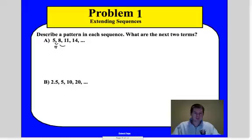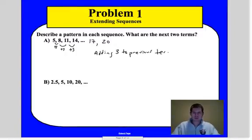So I see plus 3, plus 3, plus 3. So basically now what we're going to say is 14 plus 3. We get the next term to be 17, and then the next one to be 20. So describe the pattern. We're adding 3 to the previous term. And then we would just say the next two terms, 17 and 20. So pretty much self-explanatory there. You're just going to figure that pattern out.